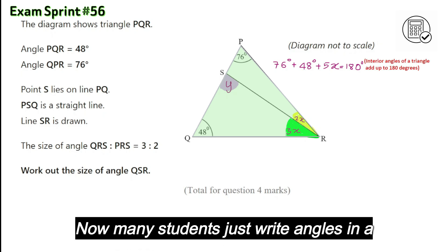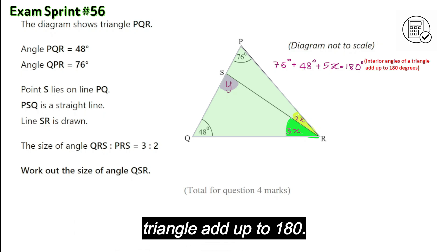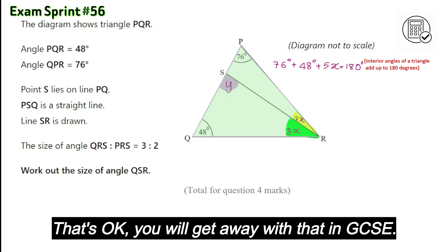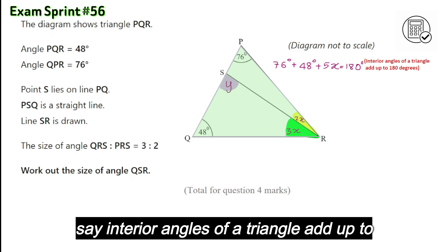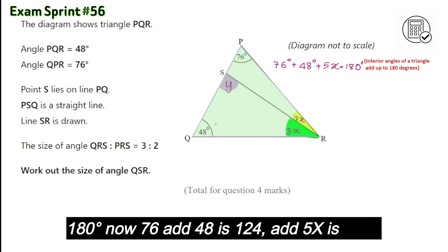Many students just write angles in a triangle add up to 180. That's okay, you'll get away with that in GCSEs. However, the GCSE exam standard way is to say interior angles of a triangle add up to 180 degrees.